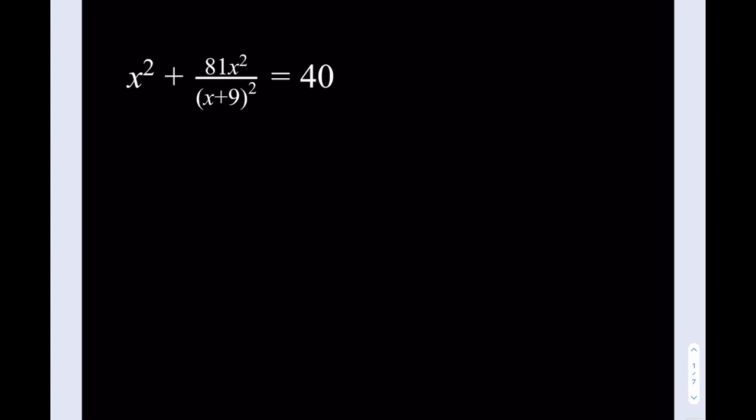Typically when you are confronted with such a problem, the typical approach is just go ahead and make a common denominator. If you do that, you're going to end up with a quartic equation. You're going to get an x squared from here, and you're going to get an x squared from here. When you multiply those, you'll get a fourth degree equation, which is going to be somewhat complicated.